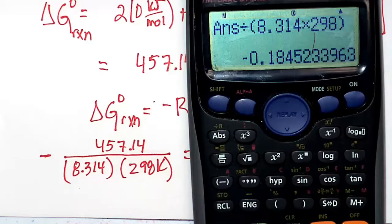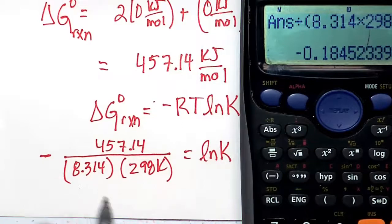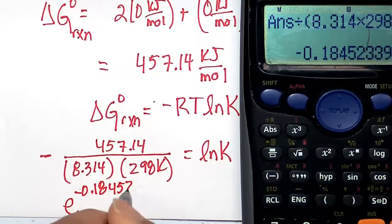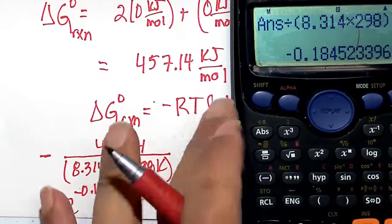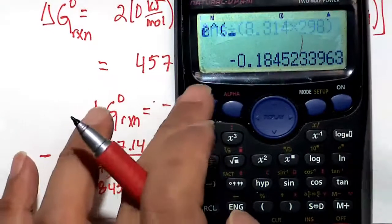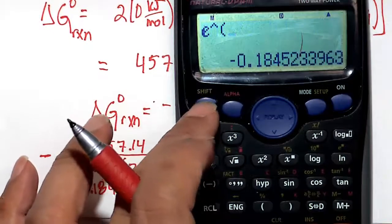So minus 457.14 divided by 8.314 times 298 in our denominator, and that gives us minus 0.1845 or so. And let's just go ahead and take e of that. So if we take e of that, e to the minus 0.18452, we will get our value which corresponds to Kp, so the inverse of the natural log of our answer, which is that.